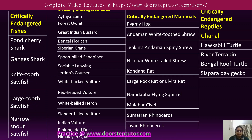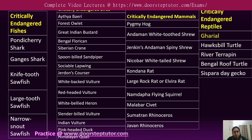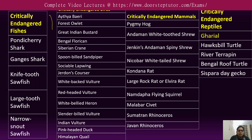According to the IUCN, there are 132 critically endangered species of plants and animals in India. Critically endangered means they are at a very high risk of extinction. Different lists exist for critically endangered fish, birds, mammals, and reptiles.